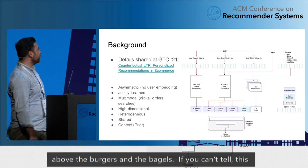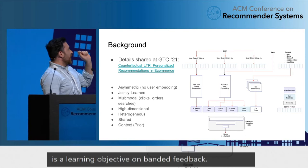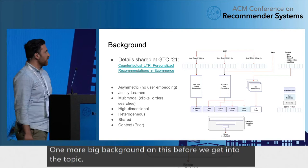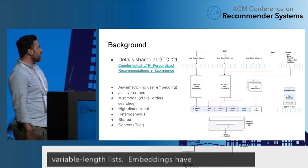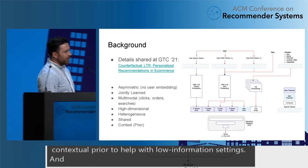We have multiple features for users and items — they're all categorical, sparse, and variable-length lists. Embeddings have vocab maps. We have a nice contextual prior to help us with low-information settings. They're asymmetric — we don't model users directly. At the bottom we have a ranking network, which is a DCN. We saw a talk earlier today about the importance of higher-order interactions, and hopefully our embeddings are high enough dimension for that.